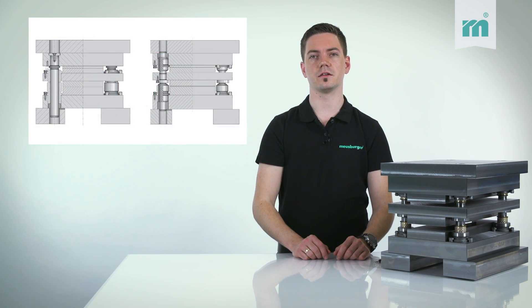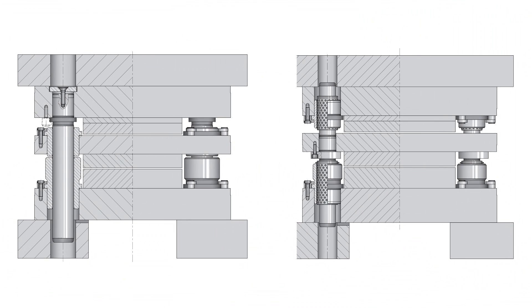For SV Standard Die Sets, the guide pillars are screwed in the top or base plate. However, for the SP Precision Die Set, the guide pillars are built into the backing plate. The center flanges of the pillars are placed on the underside, thus they are always installed exactly in the center.